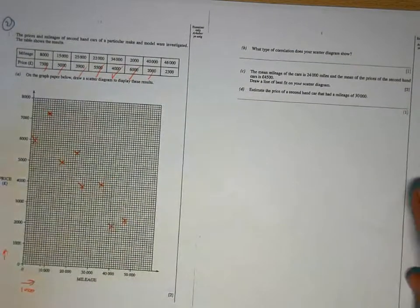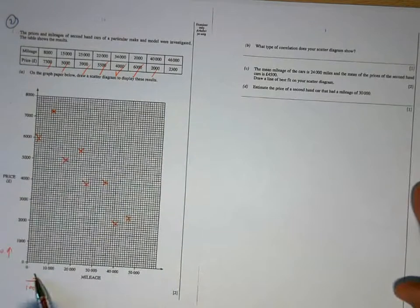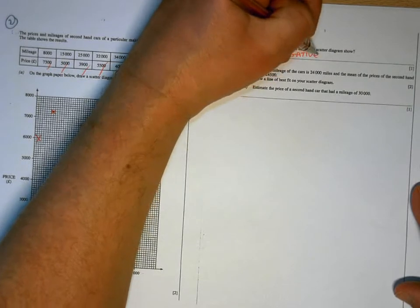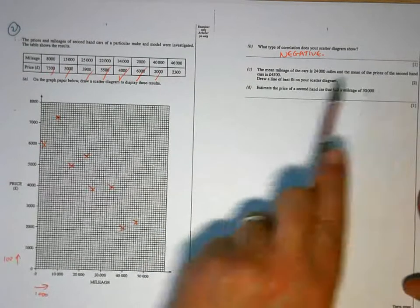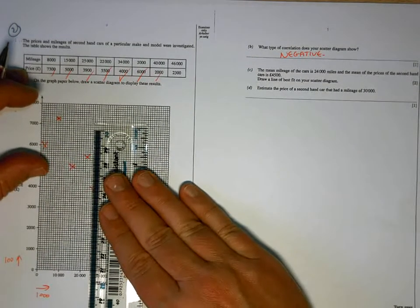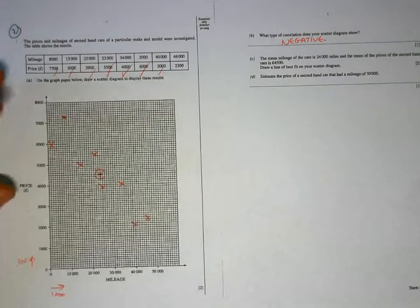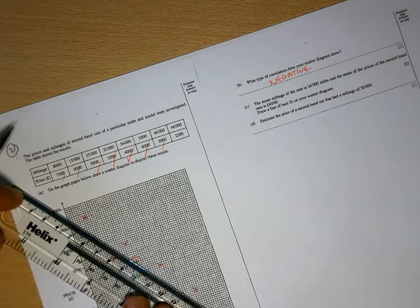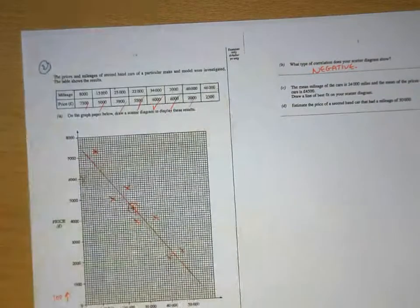What type of correlation does your scatter diagram show? Well as I mentioned earlier, if as one variable increases, the other decreases, so as the mileage goes up, the value goes down, that's negative correlation. Again in this question they're giving us the mean information. The mean mileage is 24,000, the mean price is 4,500. So 24,000 is there, and 4,500 is there. Mark that differently. So my line is going to go through that point and be in the same kind of steepness as the graph. That should do it. So that's my line of best fit.